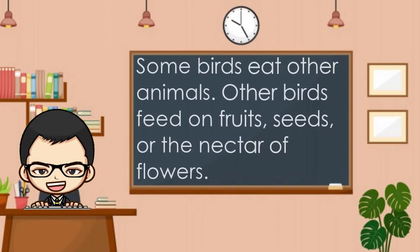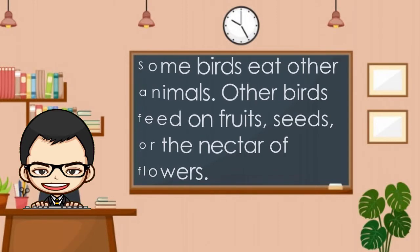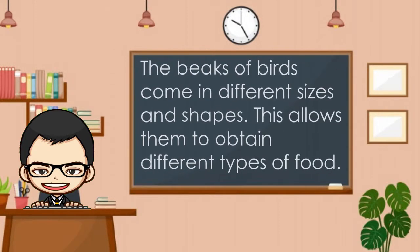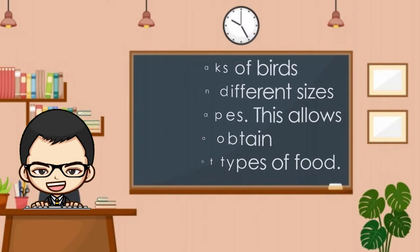Some birds eat other animals. Other birds feed on fruits, seeds, or the nectar of flowers. The beaks of birds come in different sizes and shapes, which allows them to obtain different types of food.